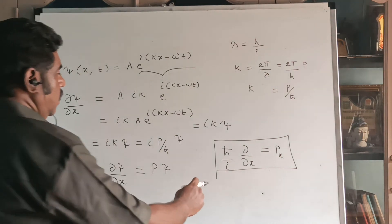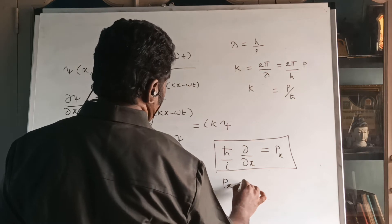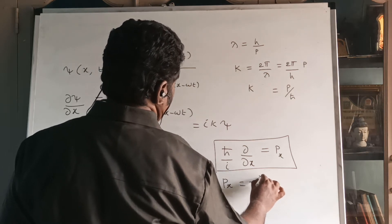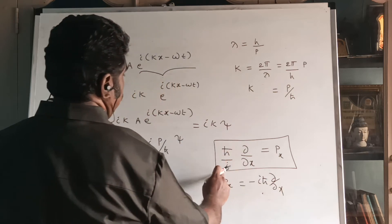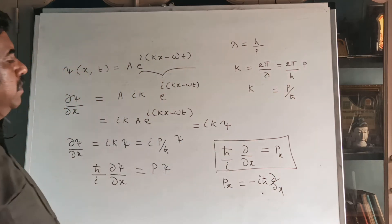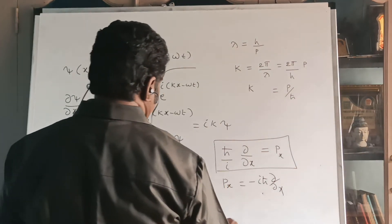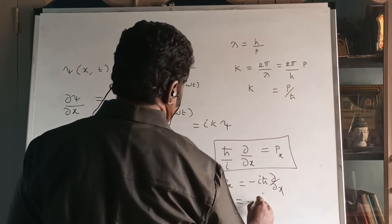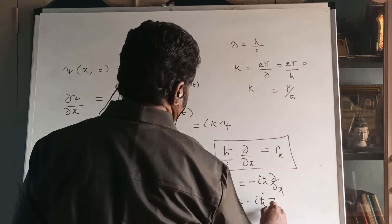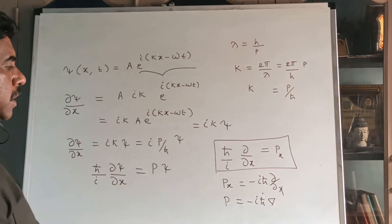This is the x-component of momentum px, since we are concentrating the motion along the x direction. This is further modified as px = −iℏ(∂/∂x). In general, the momentum operator p = −iℏ∇, expressed in terms of x, y, and z components.